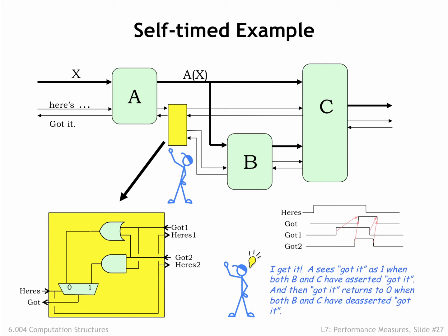Let's take a quick look at the timing diagram shown here. After A asserts here's X, the circuit in the yellow box waits until both the B and the C stage have asserted their got X signals before asserting got X to the A stage.